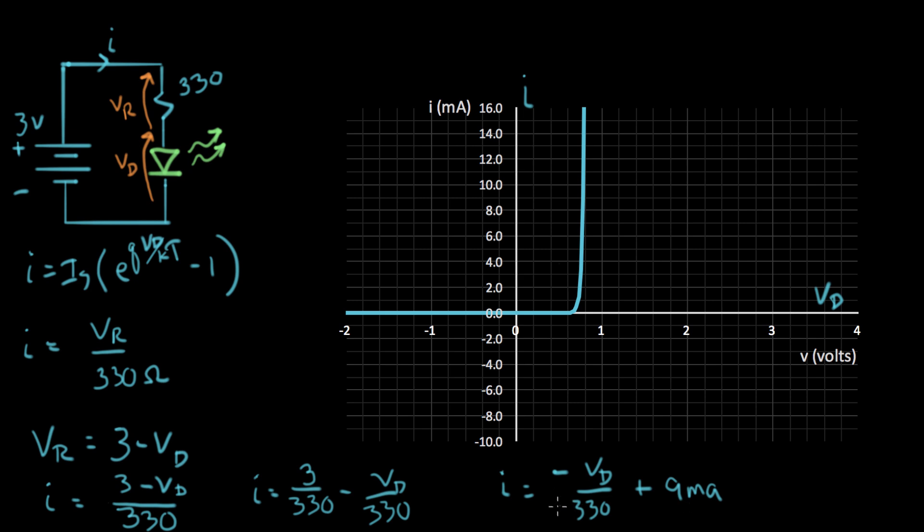Let me write this to recognize it as an equation of a line. Minus VD over 330 plus 3 over 330 is 9 milliamps. So this is the equation of a line. And the slope is right here, minus 1 over 330. And the I intercept is 9 milliamps. So let's see if we can plot this line. This is actually called a load line. That's just a nickname for this kind of expression that you get when you have a resistor connected to a fixed power supply above. And the resistor is hanging down from it. You get this characteristic equation of a line that has a negative slope which is really distinctive.